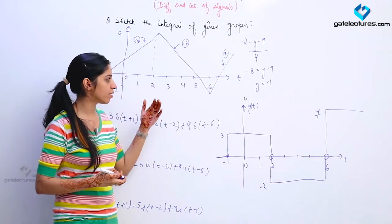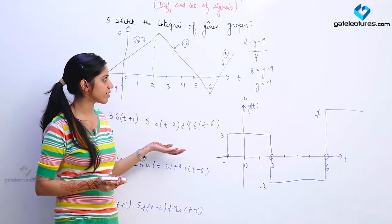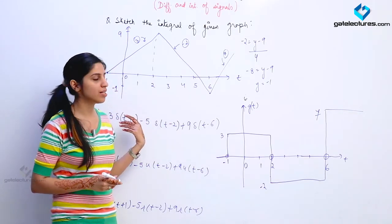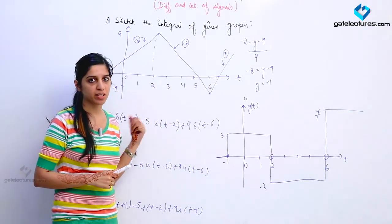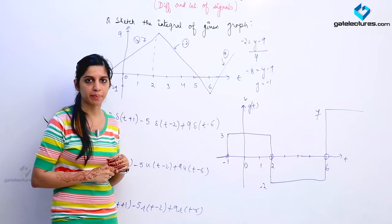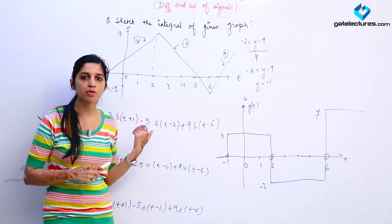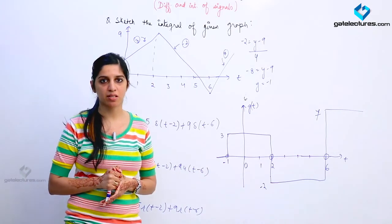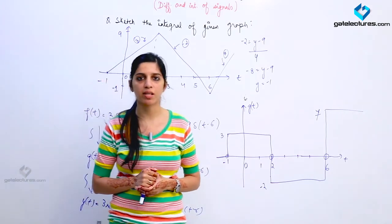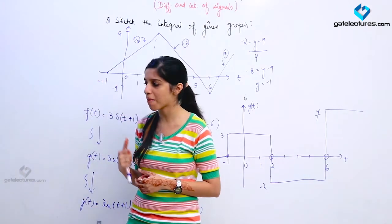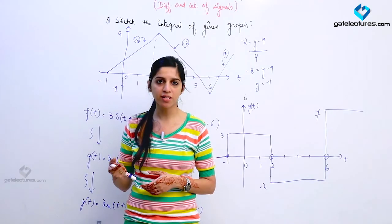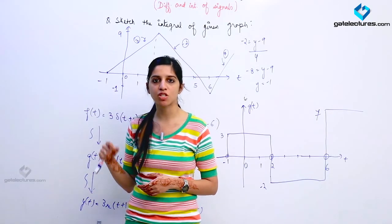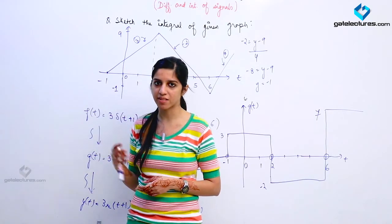So this is how we express signals as differentiations or integrations of each other. The same procedure is followed in discrete time signals as well — we can express them as differences or summations of each other.